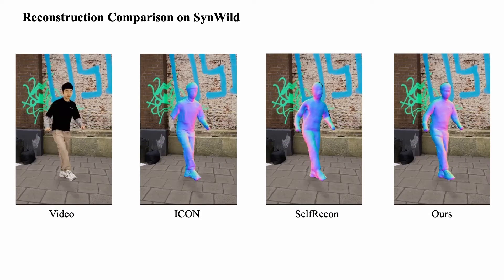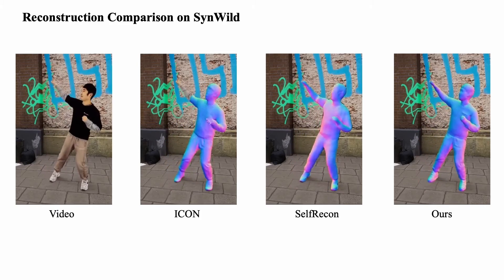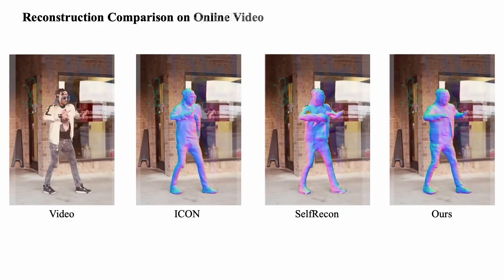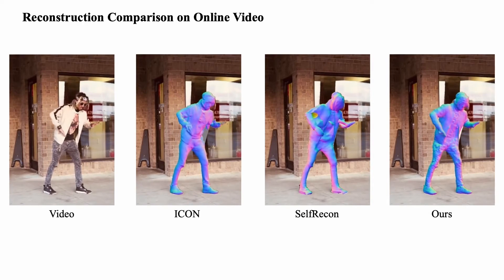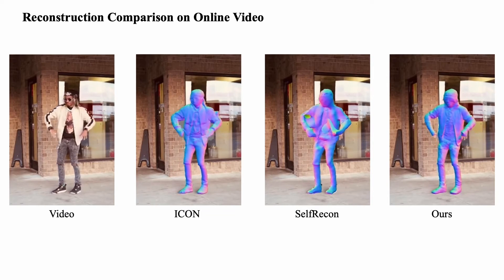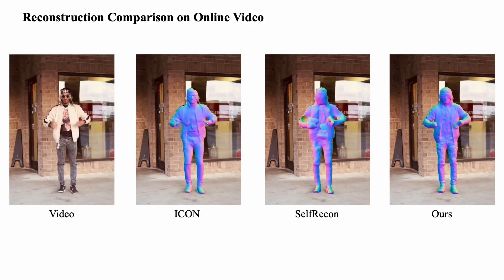The results on our proposed SYNWILD dataset are consistent with the previous comparison. Our method produces a more complete human shape and recovers more surface details, such as cloth wrinkles. We further conduct qualitative comparisons on online videos. In this more general setting, our method performs consistently better than other baseline methods. We attribute the superiority of our method to the better decoupling of humans from the background by our proposed modelling and learning schemes.